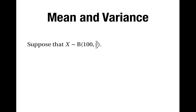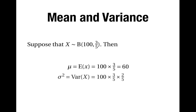For example, suppose that the random variable x has the binomial distribution with 100 trials and 3/5 as the probability of success. Then the mean is equal to 100 times 3/5, which is 60. And the variance is equal to 100 times 3/5 times 2/5, which is equal to 24.